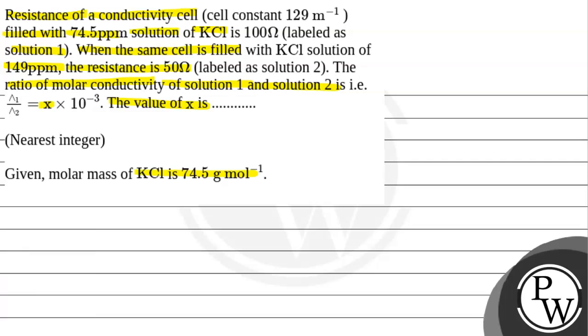So the question gives us a conductivity cell with resistance of 100Ω when the concentration is 74.5 ppm, that is solution 1. And we have solution 2, same cell we use, but the concentration has a variation of 149 ppm, and the resistance is 50Ω. We have to find the ratio of the molar conductivity 1 to 2.